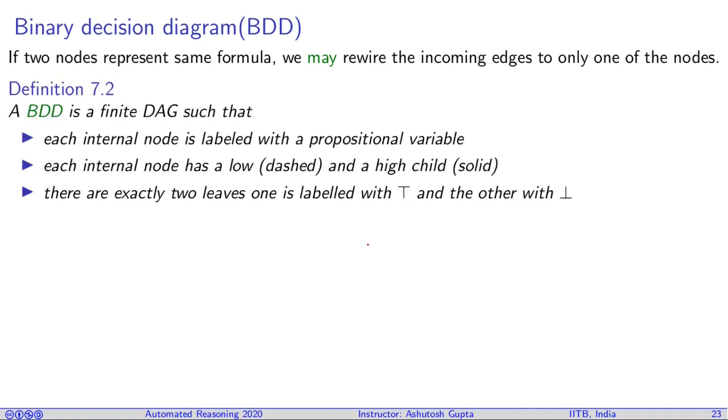So what is a binary decision diagram? Each internal node is labeled with a propositional variable. Each internal node has a low child, which we will write as a dashed edge, and a high child, which is written as a solid edge. There are exactly two leaves, one labeled with true and another labeled false.